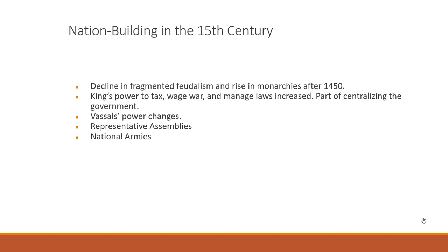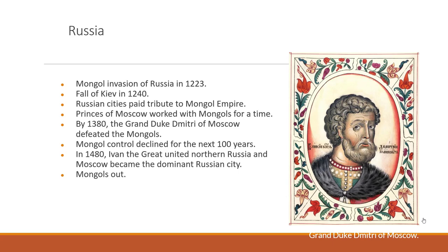Kings had more power during this time period. Some lords were sent to representative assemblies—like Parliament in England. National armies were created: an army that fights for the King of England, an army that fights for the King of France. We'll briefly discuss Russia becoming a nation: Russia was invaded in 1223 by the Mongols, and the Russian city of Kiev fell in 1240. After this, Russian cities had to pay tribute to the Mongol Empire. Over time, the princes of Moscow began to rise.